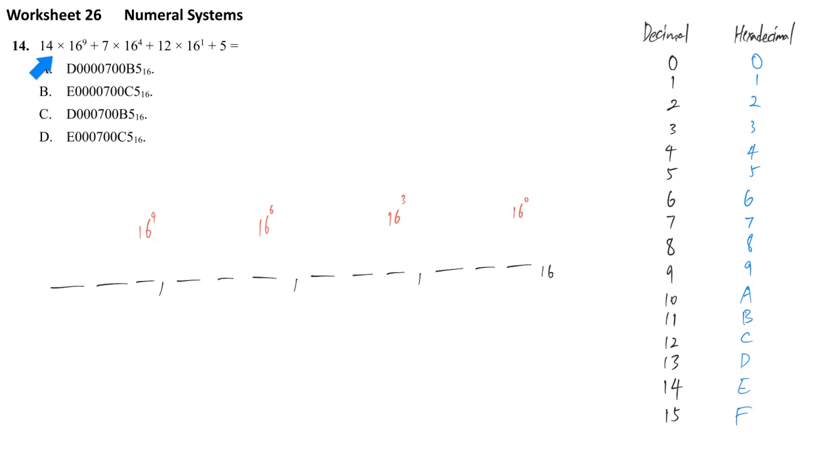And then we find the first term, 14 times 16 power 9. So we separate the term whenever we find plus something or minus something. There are in total 4 terms here. 16 power 9 means this digit we have to place 14.